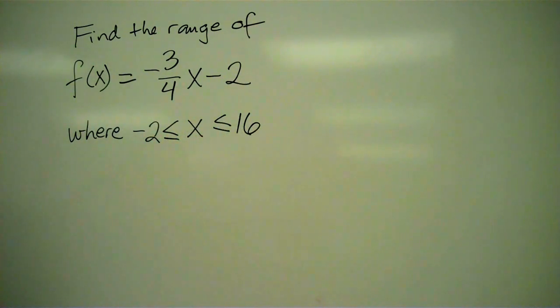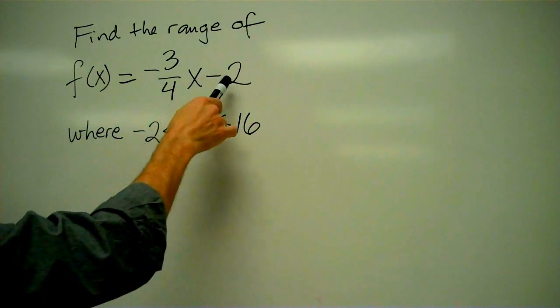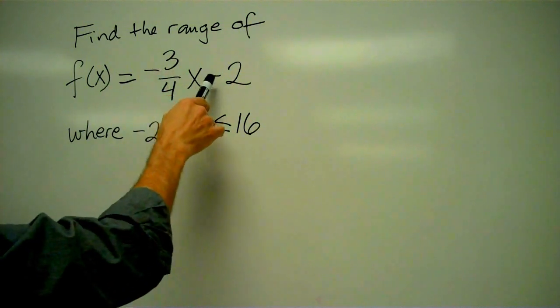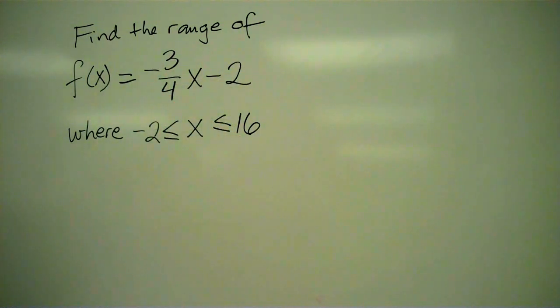Now I guess the first thing we ought to do is look at our function and ask ourselves, what is that? What kind of function is that? Well, negative 3 fourths x minus 2, this fits the model mx plus b, so that fits the model of a linear function.